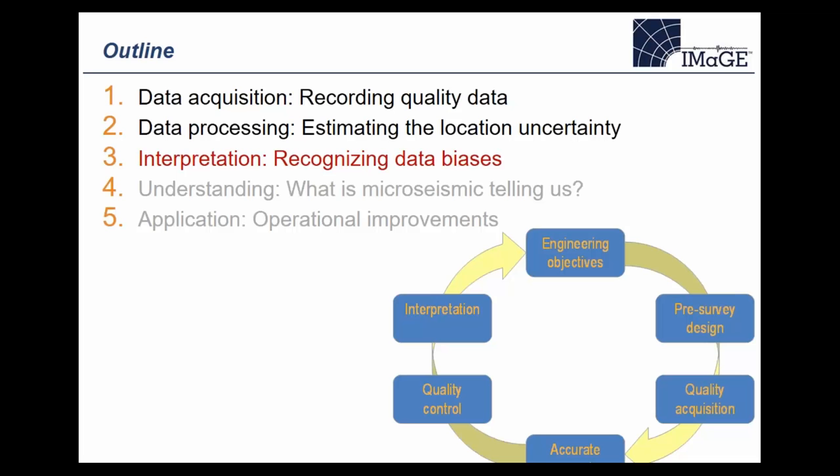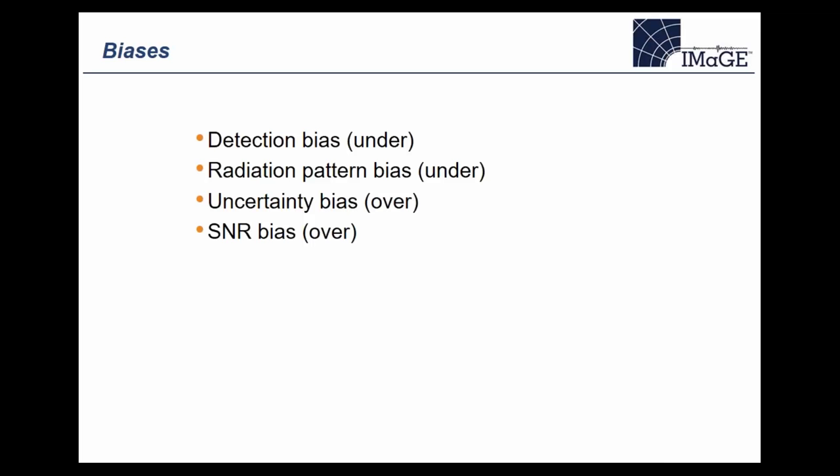Moving on after processing, I want to talk briefly about interpretation — focusing on data biases that exist in any microseismic dataset. I'll talk about them individually and then discuss interpretation ways to mitigate these biases. There are four we'll touch on. The first is detection bias.